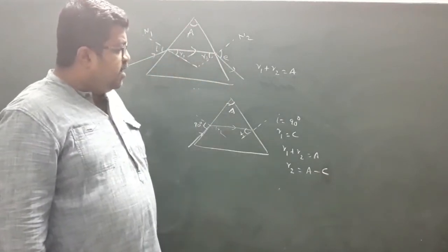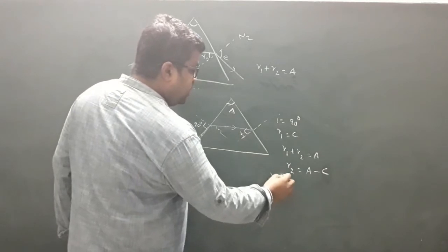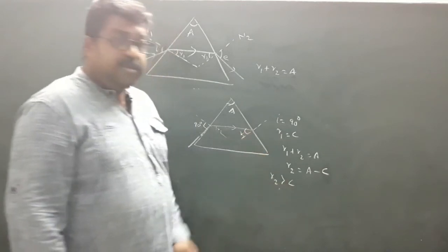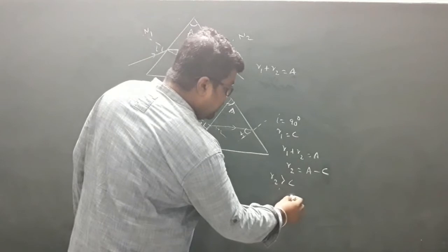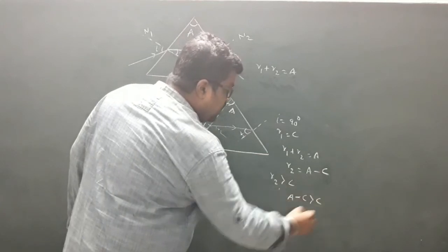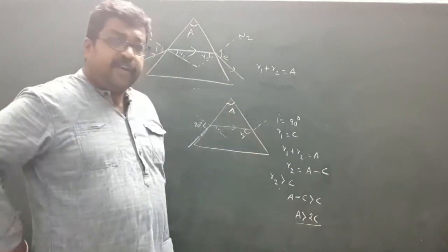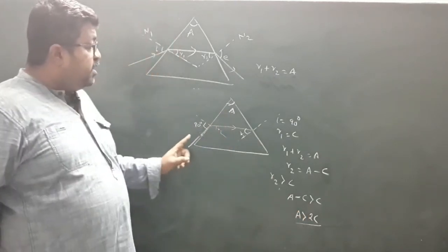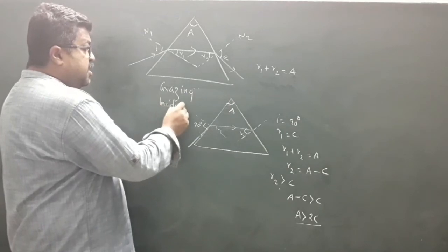This ray will fail to emerge from the second refracting surface if r2 is greater than C, meaning it will undergo total internal reflection. Since r2 equals A minus C, substituting gives A minus C greater than C, or A is greater than 2C. So the ray will fail to emerge from the second refracting surface if the angle of prism is greater than two times the critical angle — this is the condition under grazing incidence.